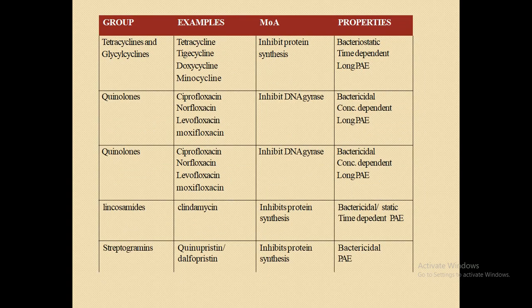Another group is tetracyclines and glycylcyclines, which include tetracycline, tigecycline, doxycycline, and minocycline. Their mechanism of action is inhibition of protein production — specifically stopping the formation of proteins inside the bacterial body. Tetracyclines and glycylcyclines are bacteriostatic, time-dependent, and have a long post-antibiotic effect.